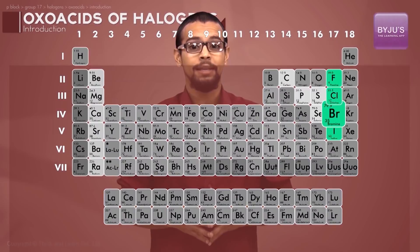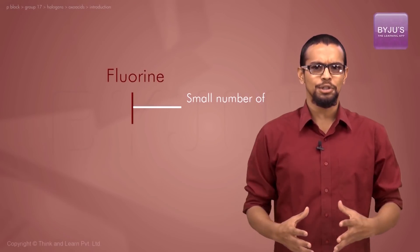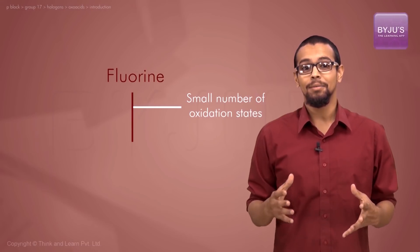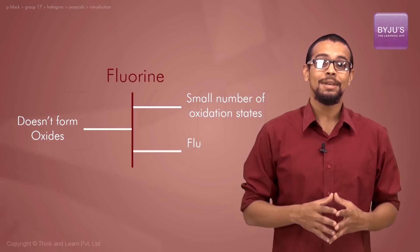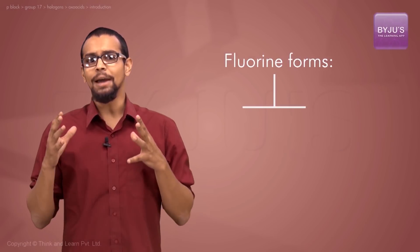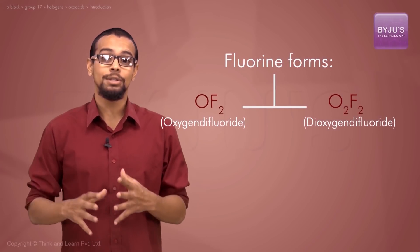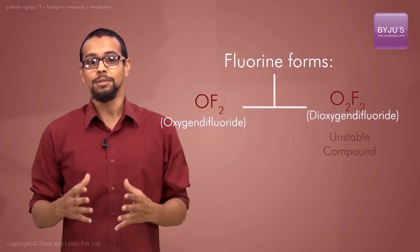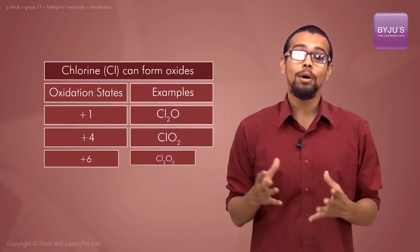Halogens form different oxides. Fluorine, considering it can take very few oxidation states, does not have true oxides - we consider them fluorides of oxygen. Fluorine can form OF2 or O2F2 (oxygen difluoride or dioxygen difluoride), though dioxygen difluoride is very unstable.